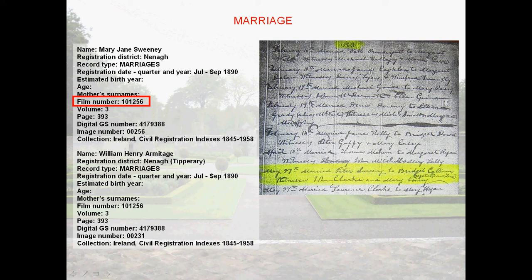Marriage records can be found. On the left is an index for Mary Sweeney and William Armitage's marriage in 1890. I found the civil registration index and now have a film number, so I can order that online through the LDS and view it at a local library or nearby church. On the right is an image of the church marriage register from 1863 for Peter Sweeney and Bridget Callanan, which lists their names and witnesses. There's also something written in the right margin under Bridget's name — I can't fully read it, but there is information sometimes found in the margins of church records.